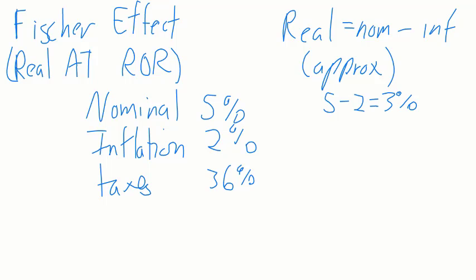The actual, if you plug it into the formula, is 2.94%. The approximation will always get you a number that's slightly larger than the actual number.